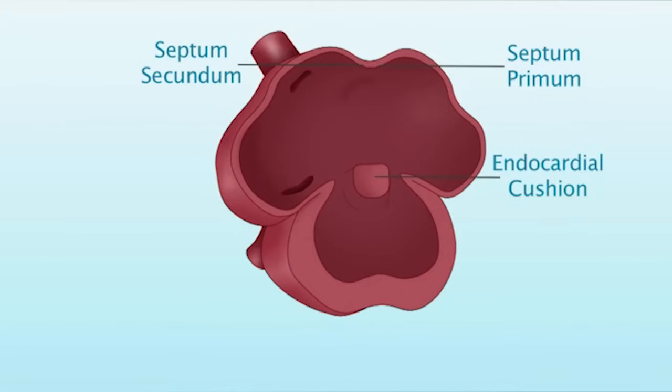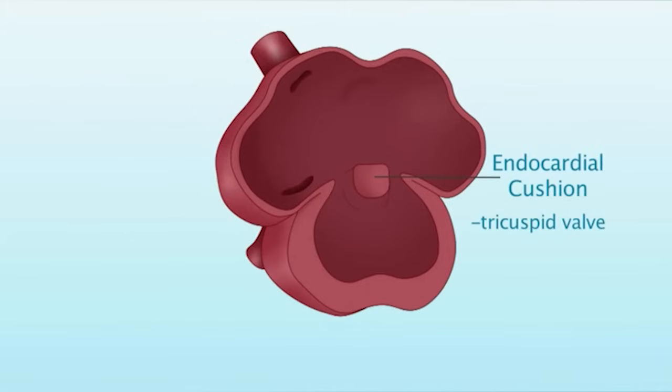The endocardial cushion tissue is located in the middle of the heart. From this tissue arises the tricuspid valve, mitral valve, part of the atrial septum, and part of the ventricular septum.